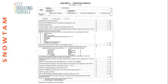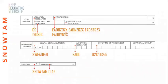This is a SNOWTAM format — a new SNOWTAM format has been introduced, so there are certain changes. We will discuss these. The first one is COM heading, then priority indicator. The highest priority addresses you will see are for Delta browser ZQ and ZX — these are the addresses to whom this SNOWTAM will be given.